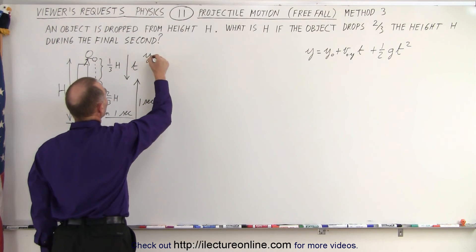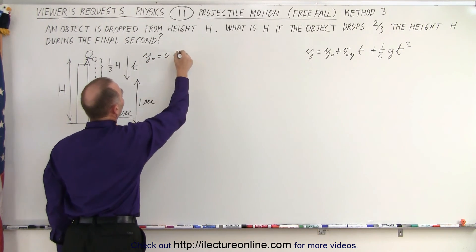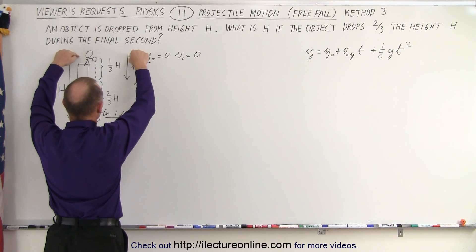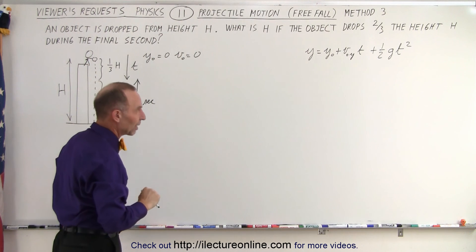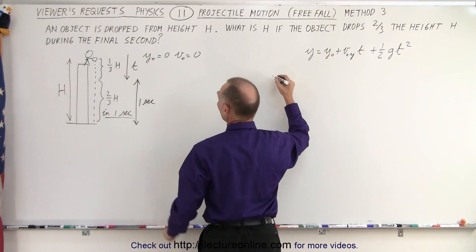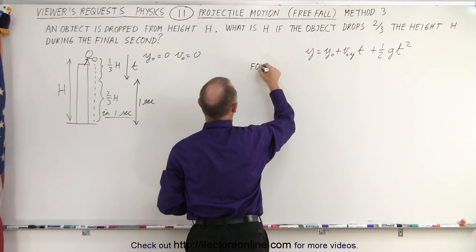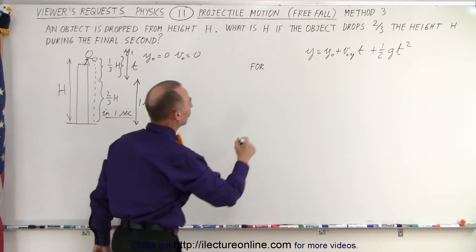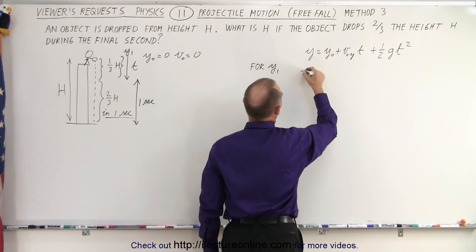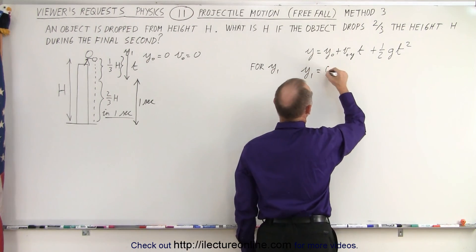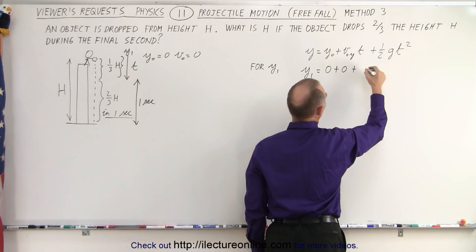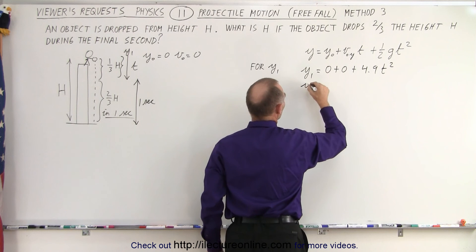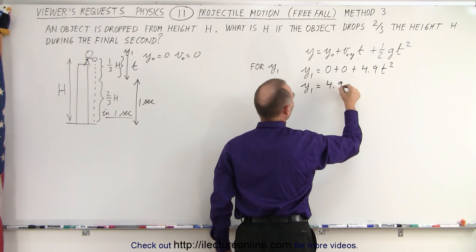Since y-initial equals zero and v-initial equals zero, the equation simplifies considerably. Starting from this point at t equals zero and going downward in the positive direction, for the first portion of the fall — let's call it y1 — we get y1 equals one-half g t squared, which is 4.9 t squared.